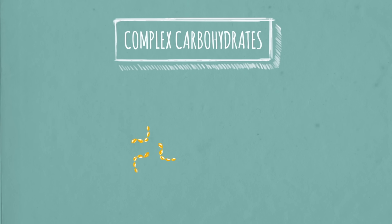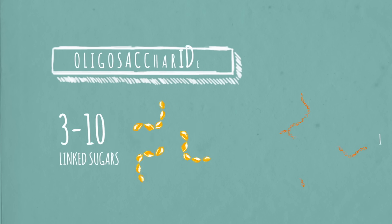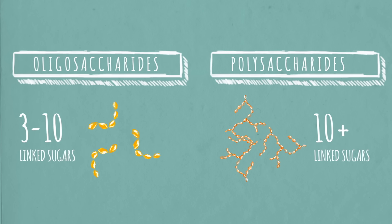Complex carbohydrates, on the other hand, have three or more simple sugars strung together. Complex carbohydrates with three to ten linked sugars are oligosaccharides. Those with more than ten are polysaccharides.